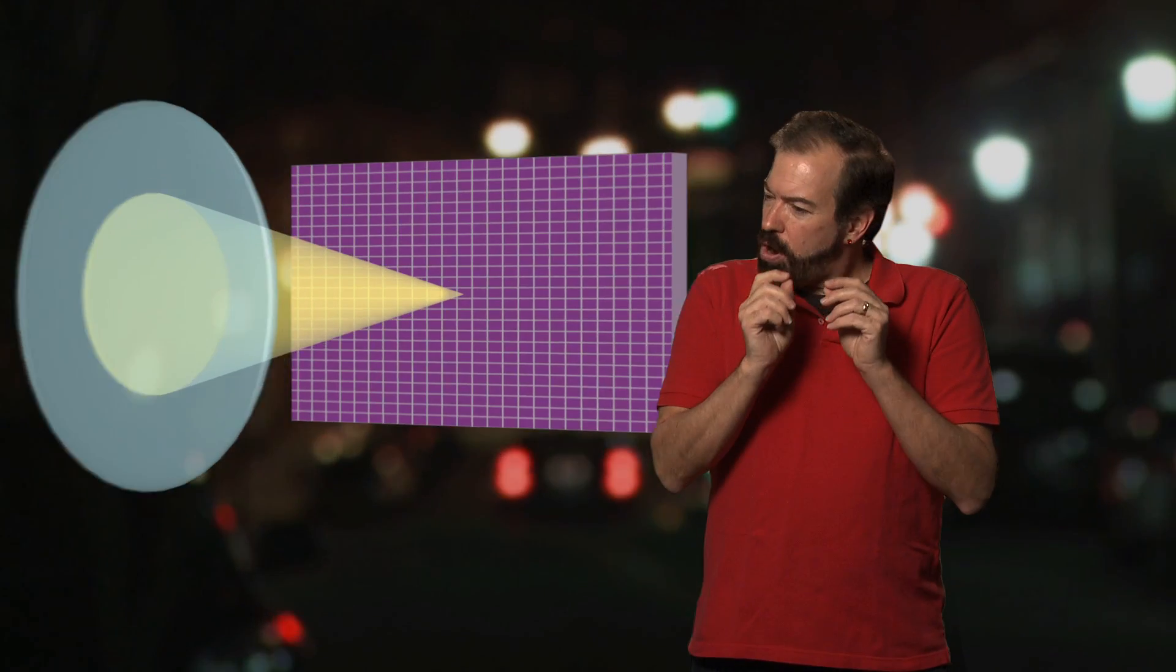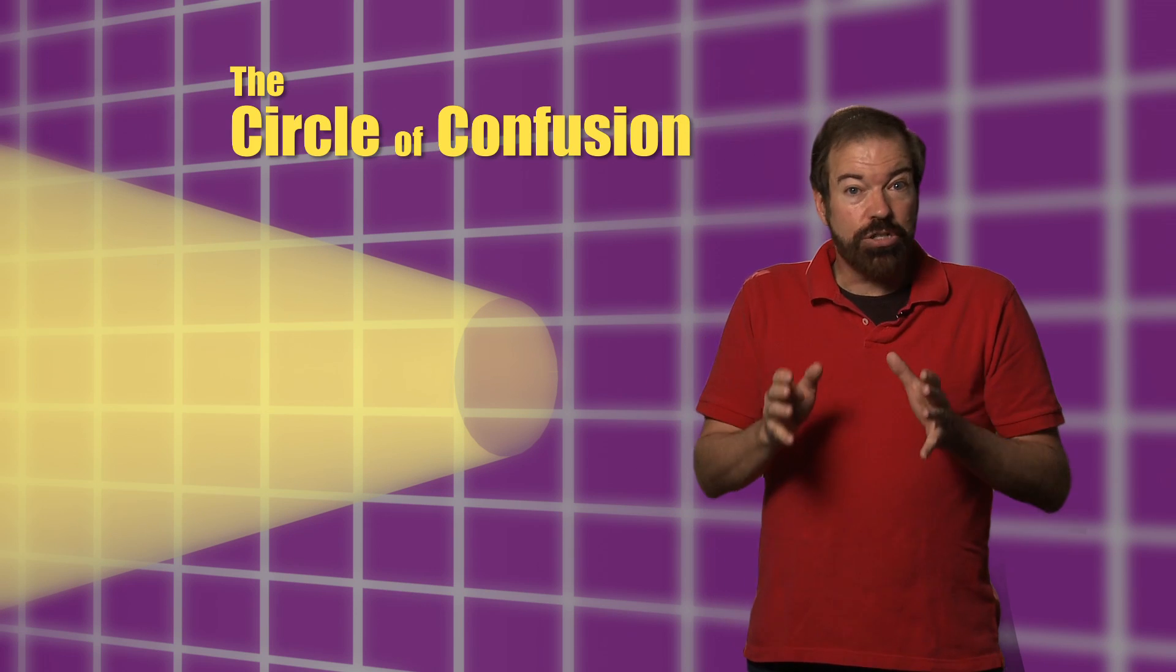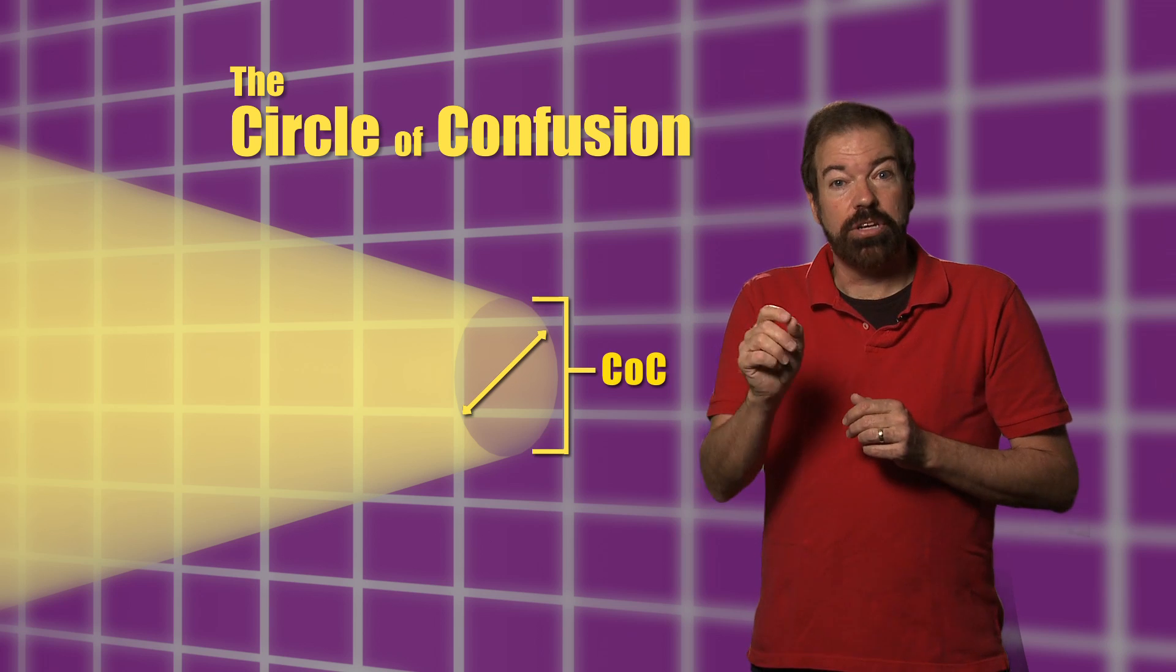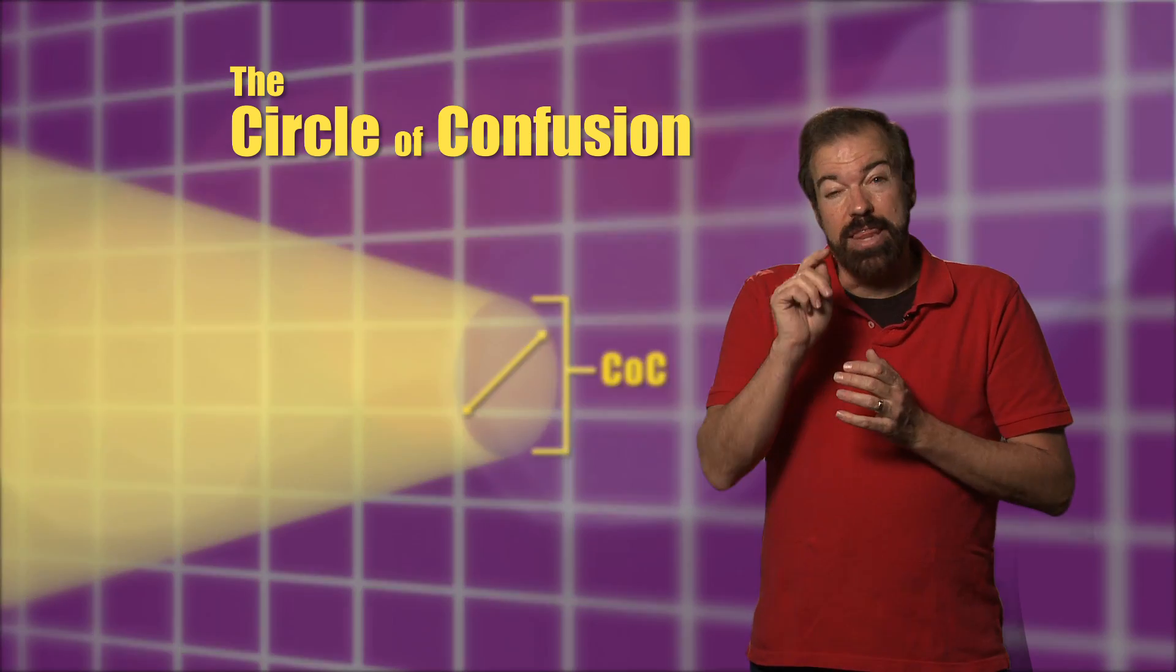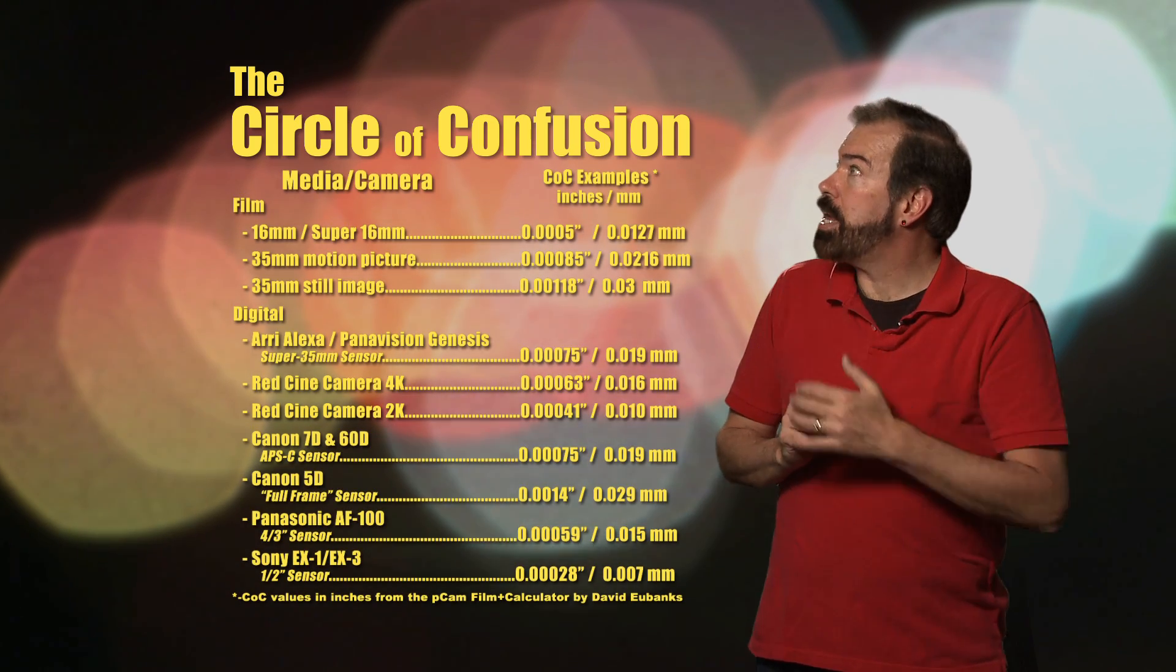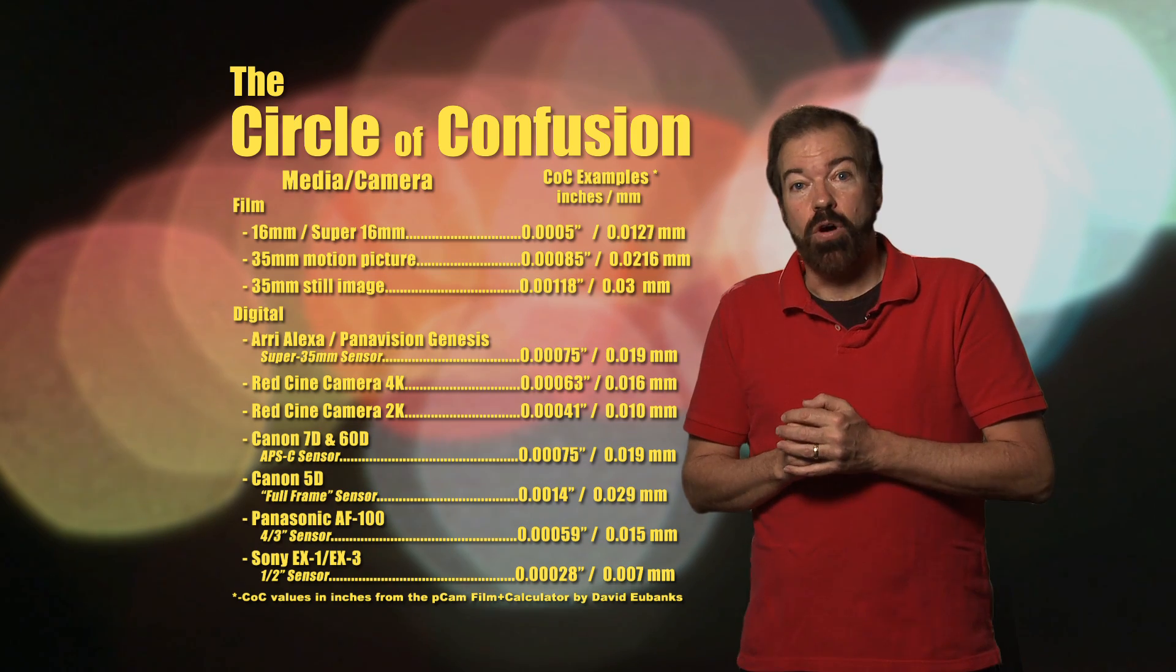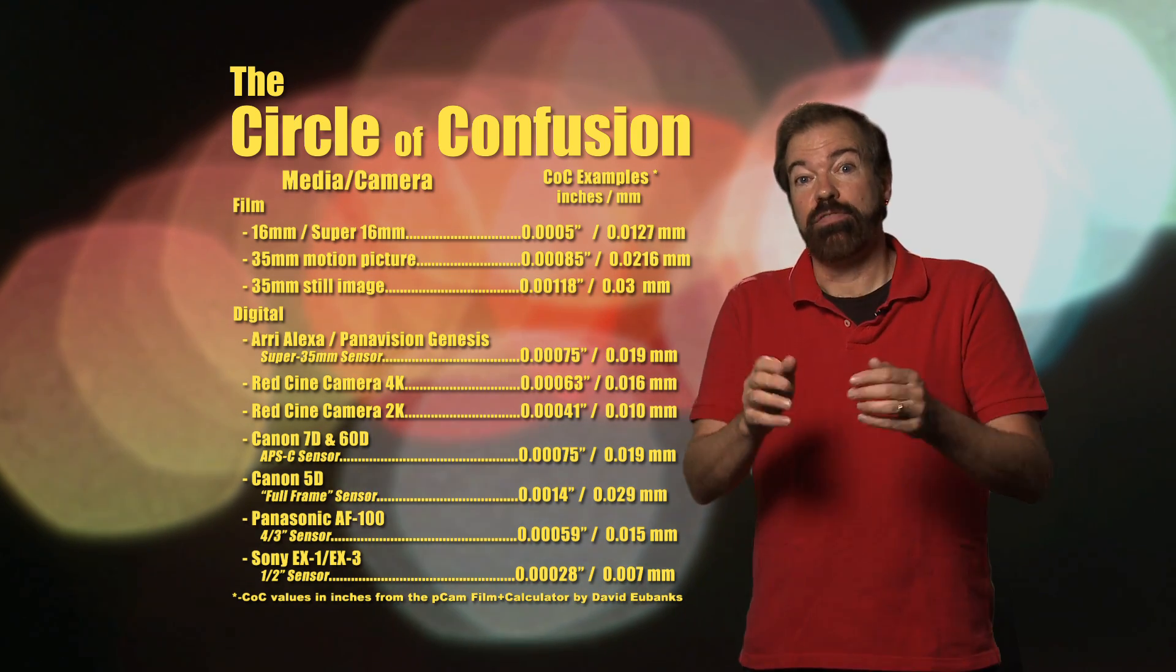The measurement of where a point of light grows to a circle you could actually see in the final image is called the circle of confusion. And it's actually measured in fractions of a millimeter on the surface of the target area. That number is what's used to calculate depth of field tables. Different media have different circles of confusion, and that's what defines what we call in or out of focus.